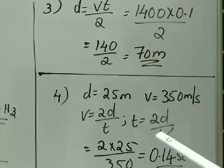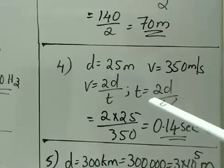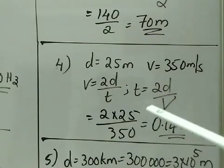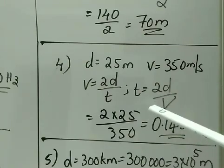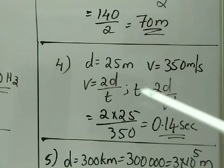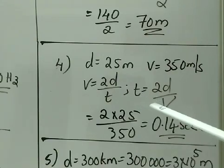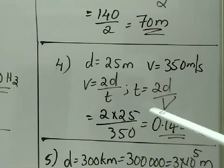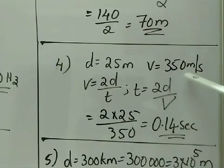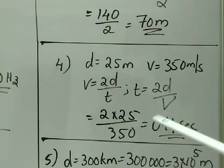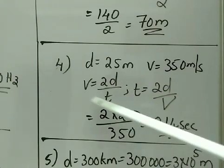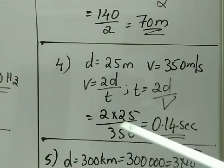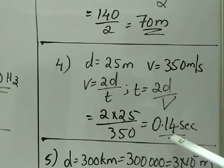Question number 4: a man standing 25 m away from a wall produces a sound and receives the reflected sound. Distance is 25 m, velocity is 350 m/s, and we calculate the time. Using V = 2D/T, T = 2D/V = 2 × 25 / 350 = 0.14 second.